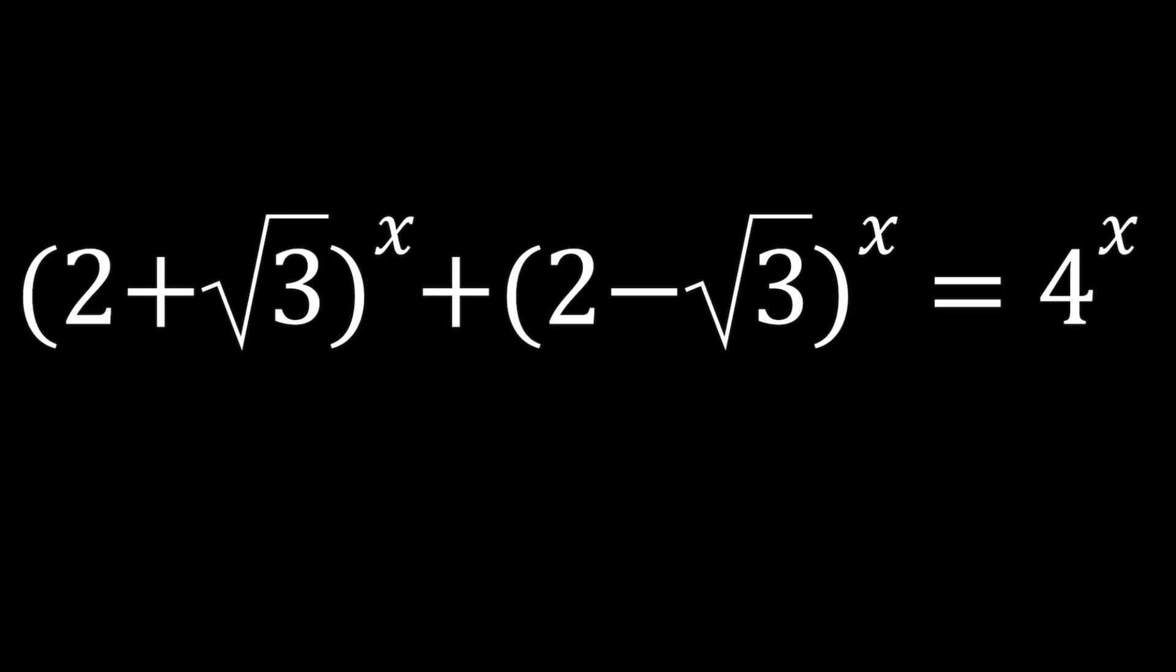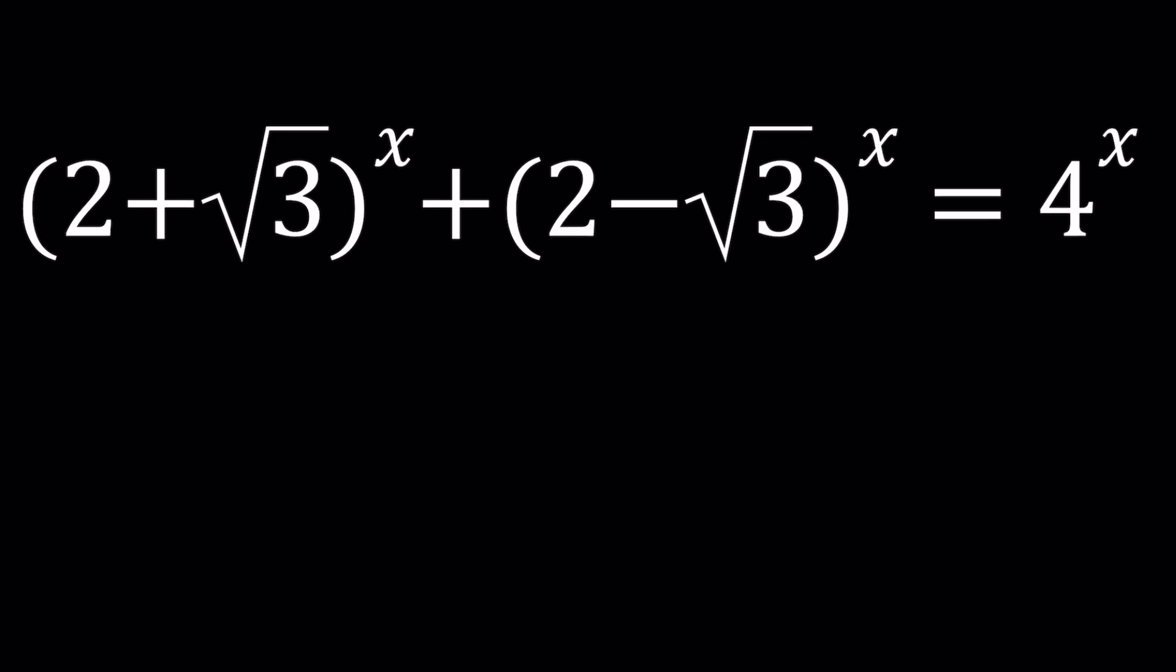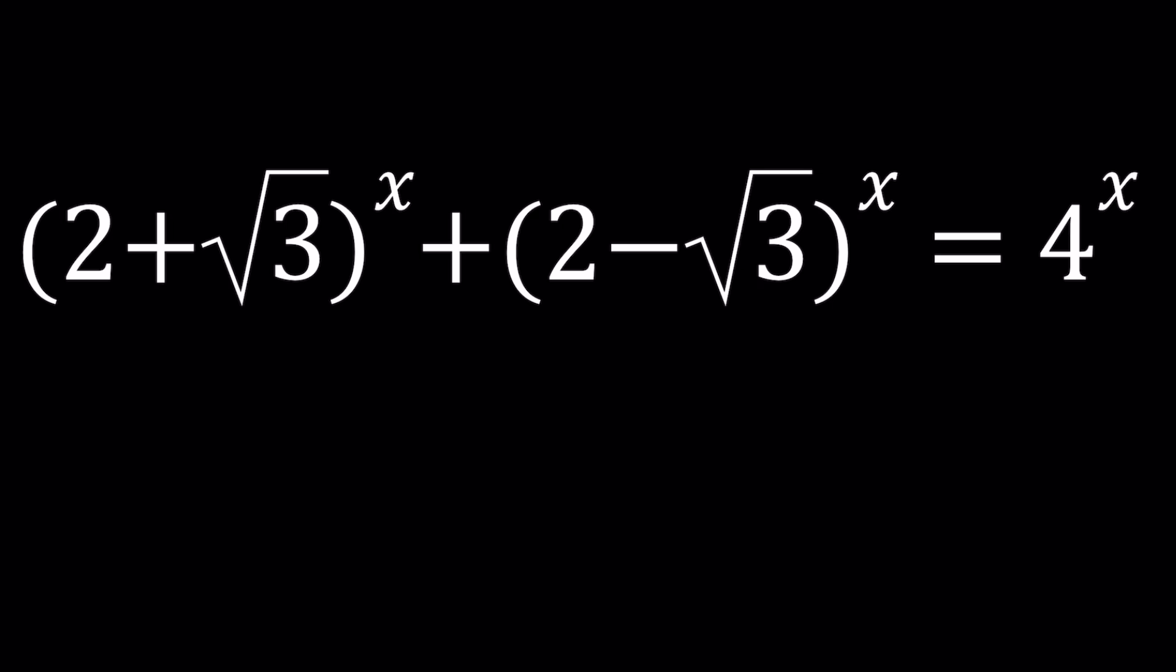We have an increasing function on the left-hand side and an increasing function on the right-hand side. To solve this problem, I'm going to divide both sides by $4^x$. So it's going to be $(2+\sqrt{3})^x/4^x + (2-\sqrt{3})^x/4^x = 1$.